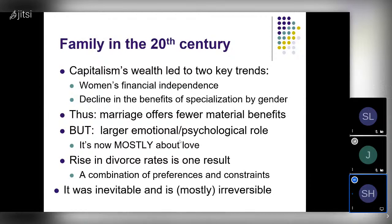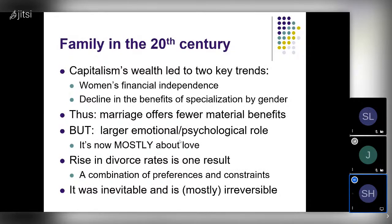I want to note that this increase in divorce rates was inevitable as a result of these changes, and I think it's mostly irreversible. What we are seeing right now is a slight decline in divorce rates. It seems we're seeing fewer but better marriages — people are getting married later and less often, but when they do get married, they seem to be better matches. There are some interesting reasons for that we could talk about in the Q&A.